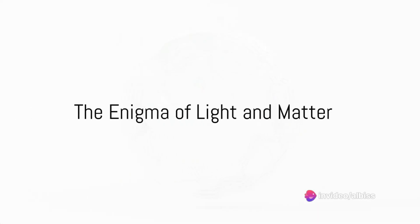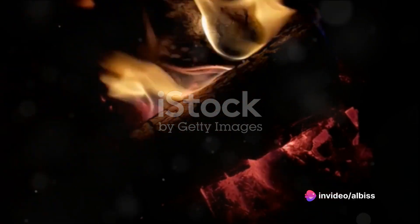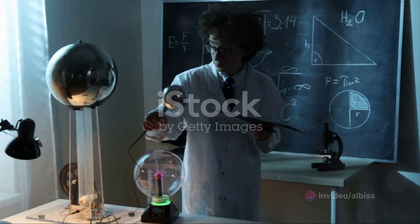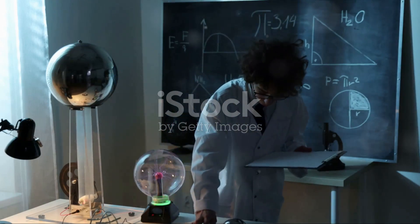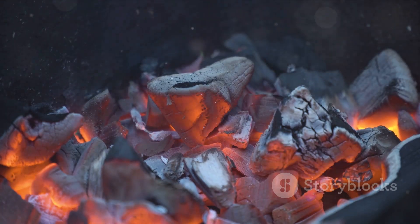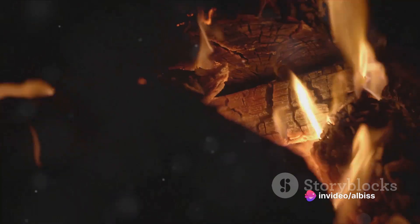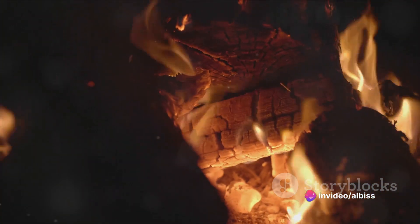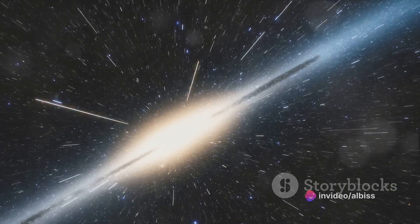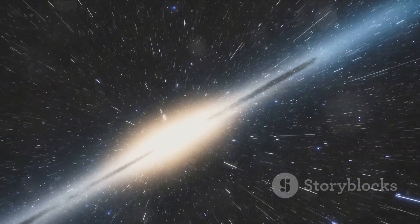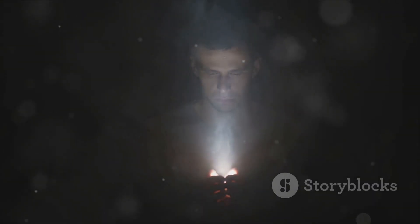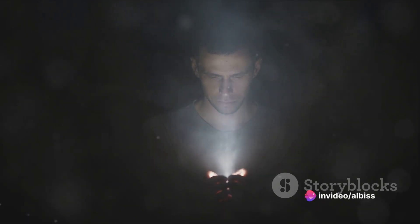Have you ever wondered why some objects are transparent while others are not? Or why some materials glow while others remain dark? This mystery of light interacting with matter has fascinated scientists for centuries. From the glowing embers of a campfire to the transparency of a glass window, the play of light with different types of matter is a spectacle that never ceases to amaze. How does light, an entity that we cannot touch or feel, have the power to transform the appearance of the world around us? How does it make some objects glow, some transparent, and leave others in the dark? These questions have led to a deeper understanding of the universe and our place in it. It's an exploration that has revealed new perspectives on the nature of reality itself.